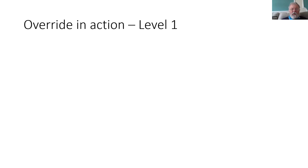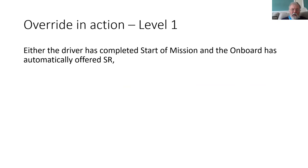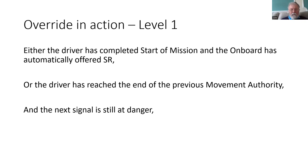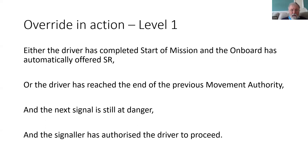If you're in level one, operation in SR is quite common in order to start after start of mission and be able to get to read the first signal. If the driver has completed their start of mission and the onboard is in SR, or they've reached the end of a previous movement authority but the signal ahead is still at danger, then they wouldn't be able to pass it under normal circumstances. If they did pass it they would read the Balise group at that signal, and almost certainly it would generate a trip. So override can be used in that situation once the signaller has authorised the driver to proceed — it means the driver can pass the red signal and there won't be a trip reaction.